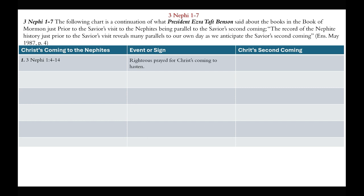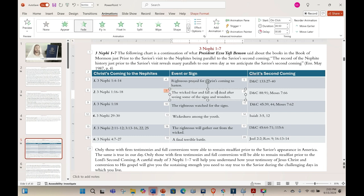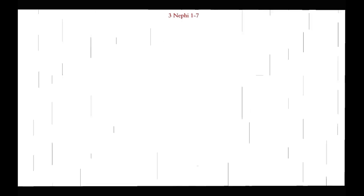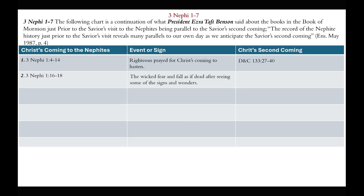In 1st Nephi 3:1, the event or sign is that the righteous prayed for Christ's coming to hasten, which will happen again in D&C 1:33. Number 2, in 3rd Nephi 1:16-18, the wicked fear and fall as if dead after seeing some of the signs and wonders, which will happen again according to D&C 88 and Moses 7. Number 3, in 3rd Nephi 1:18, the righteous watched for the signs, which will happen again in D&C 45 and Moses 7. Number 4 involves wickedness among the youth, which Isaiah 3:5-12 says will happen again prior to Christ's second coming.